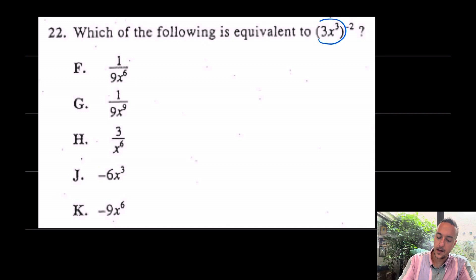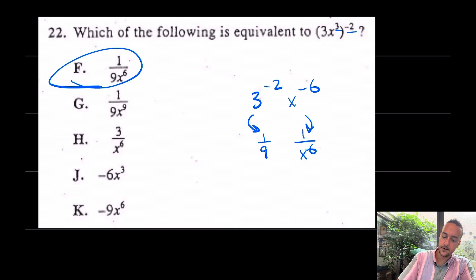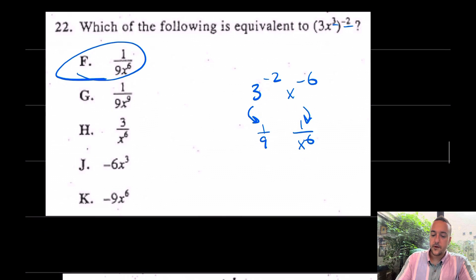First of all, what's happening here? This is all getting hit by this negative second power. Remember, that's probably going to send it to the bottom. In that case, I have three to the negative second x to the negative sixth. Remember, power of a power. In that case, what will this become? This will become one ninth, while this will become one over x to the sixth. Put that all together. And what answer do we like? I think we like answer choice F. That's number 22. If you have any questions, please comment down below and I will get back to you.